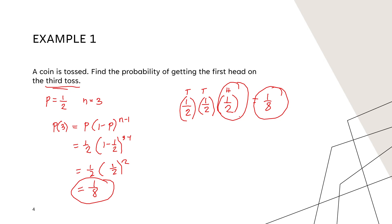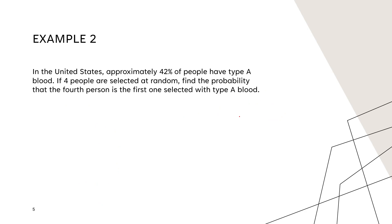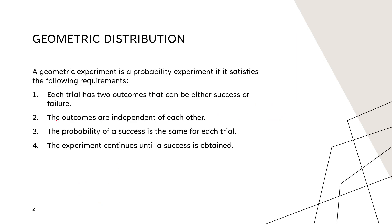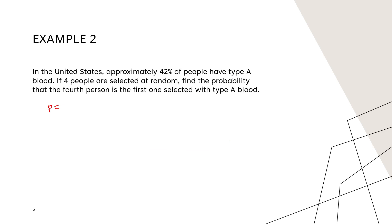Example number two: in the United States, approximately 42 percent of people have type A blood. Four people are selected at random. Find the probability that the fourth person is the first one selected with type A blood. This satisfies the geometric distribution requirements: each trial has two outcomes (type A or not), outcomes are independent, probability of success is the same for each trial, and the experiment continues until a success is obtained.